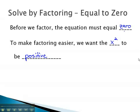It is very important the equation equal zero before we factor, because the zero product rule requires the equation to equal zero first before we set each factor equal to zero.